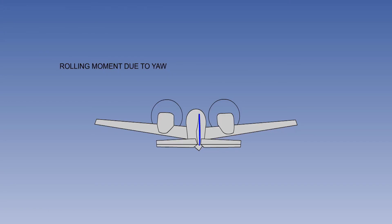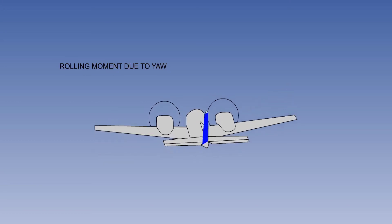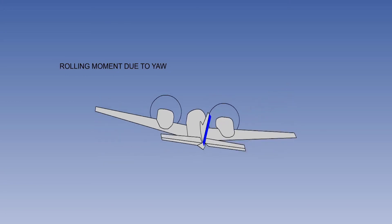The right wing is accelerated and the left wing is decelerated. Therefore, the right wing will generate more lift and the left wing will generate less lift. A left yaw will give a roll to the left. A right yaw will give a roll to the right.